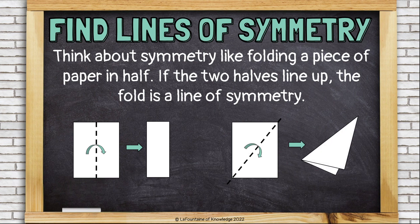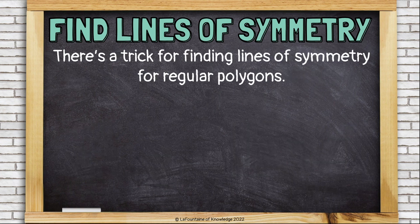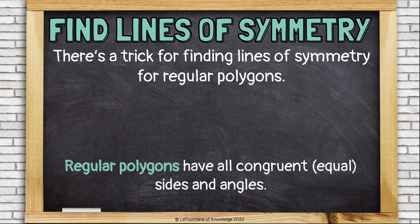When I folded it down the middle, the two halves lined up. When I folded it diagonally, the two halves did not line up. There's a trick for finding lines of symmetry for irregular polygons. Regular polygons have all congruent or equal sides and angles.